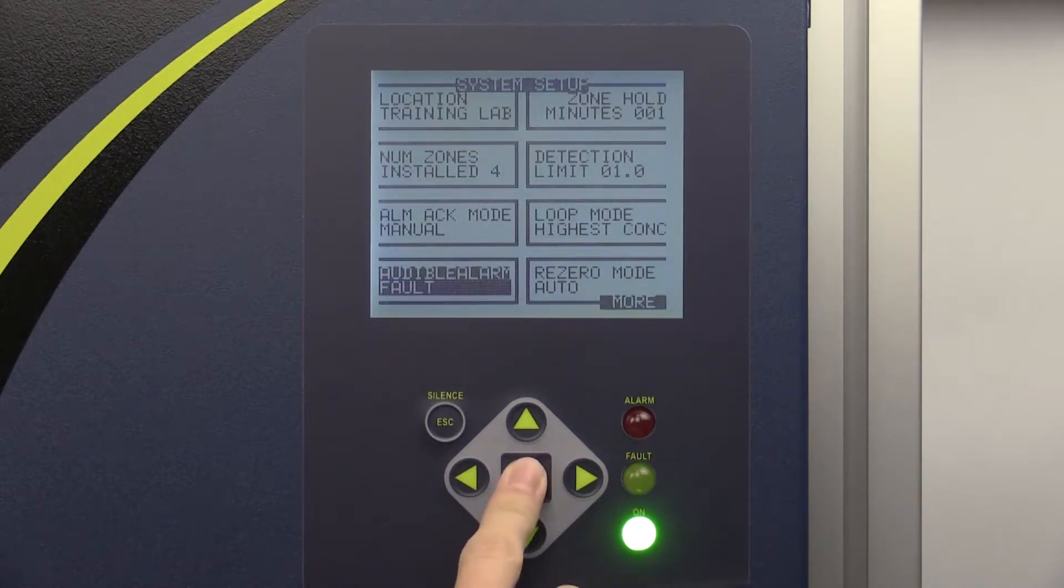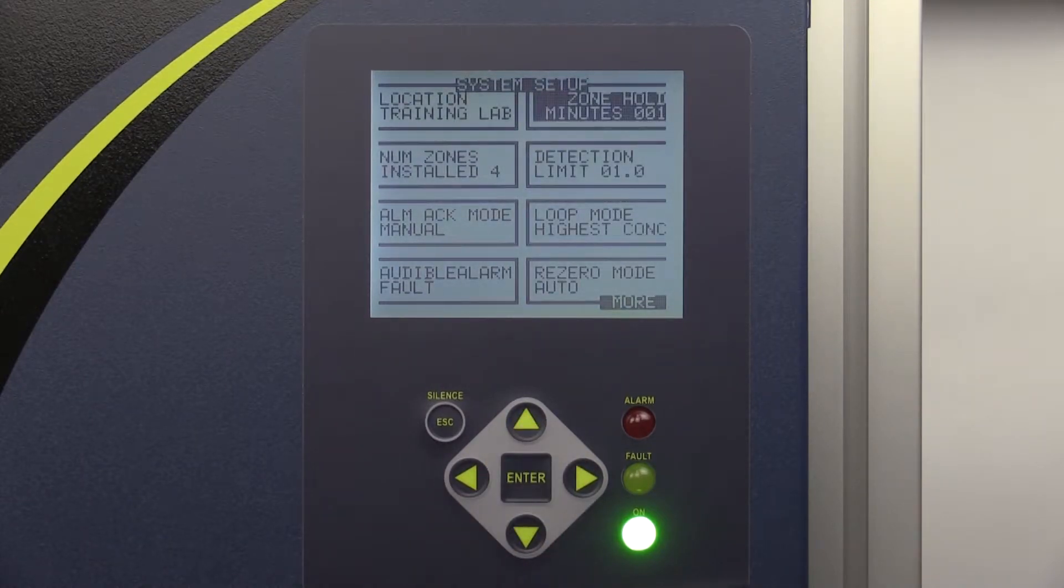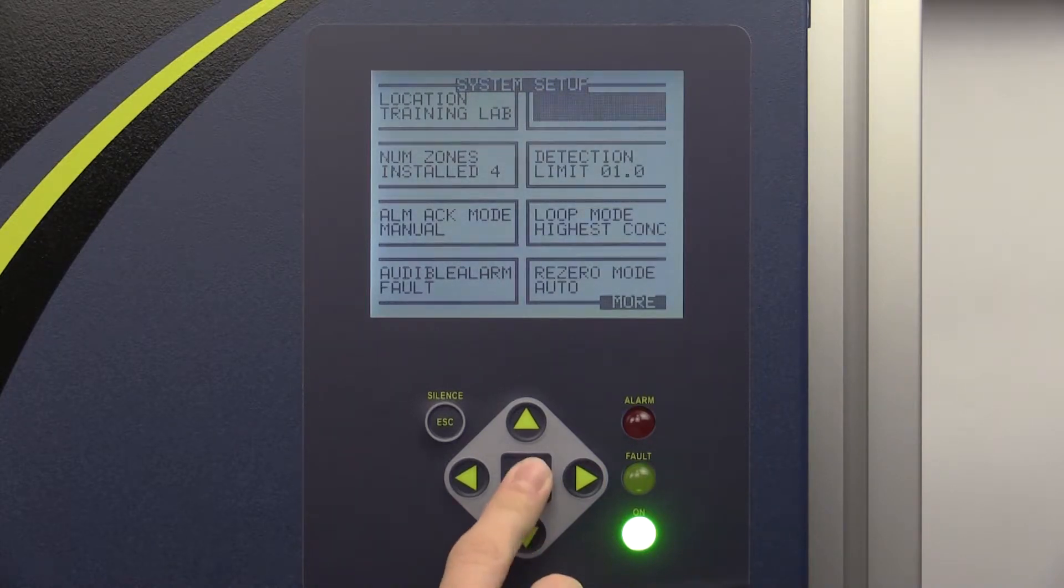The zone hold tab allows you to set the length of time a zone will be monitored when the zone hold feature is activated. Use the up and down arrows to change the time length. It can be set anywhere from 1 to 999 minutes.